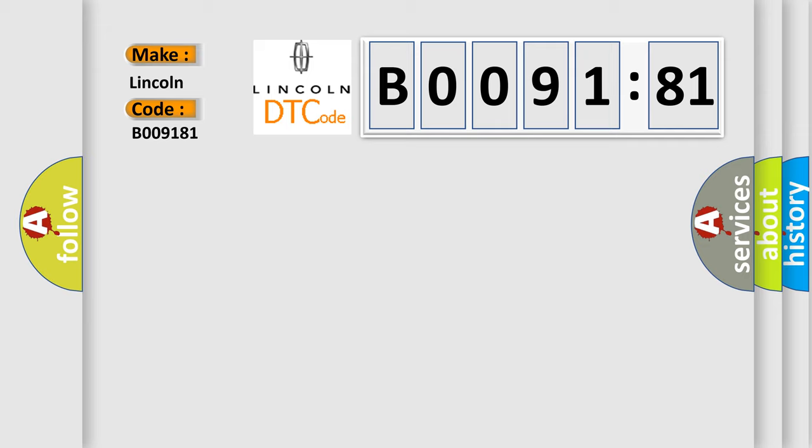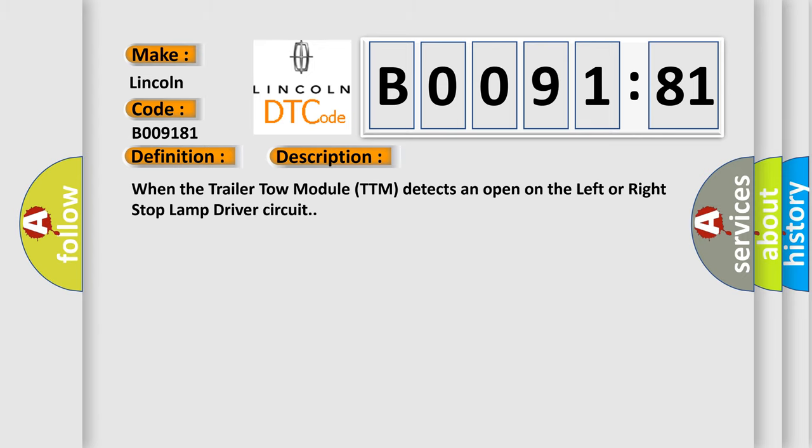The basic definition is: stop left or right light command, circuit open. And now this is a short description of this DTC code. When the trailer tow module TTM detects an open on the left or right stop lamp driver circuit.